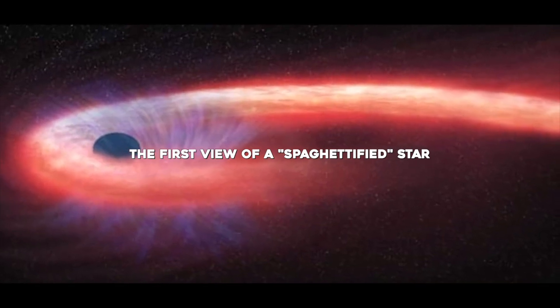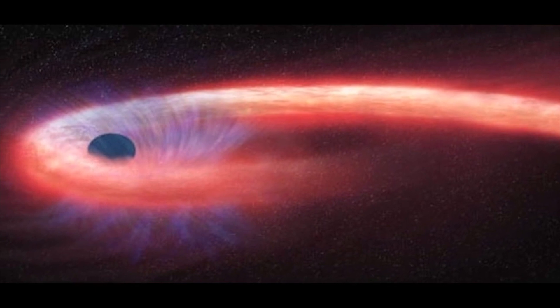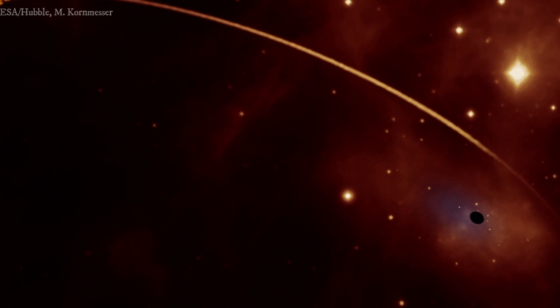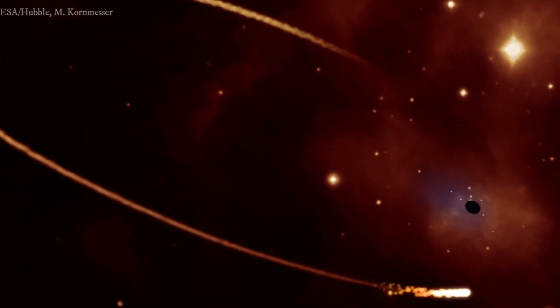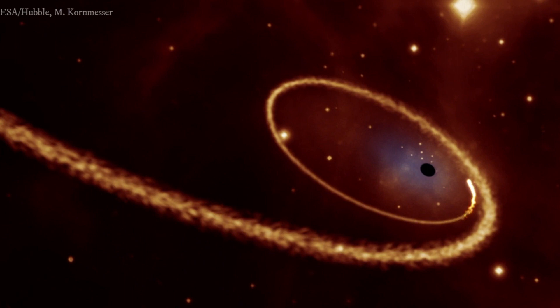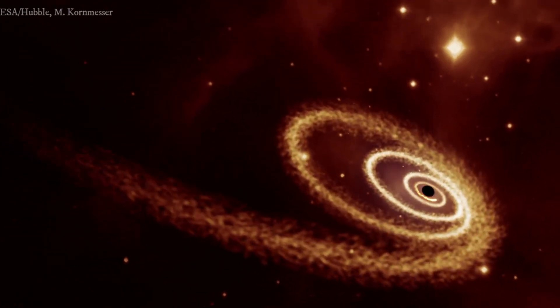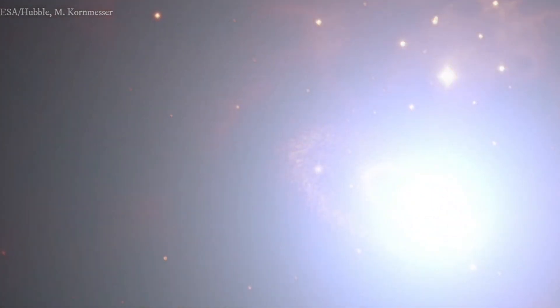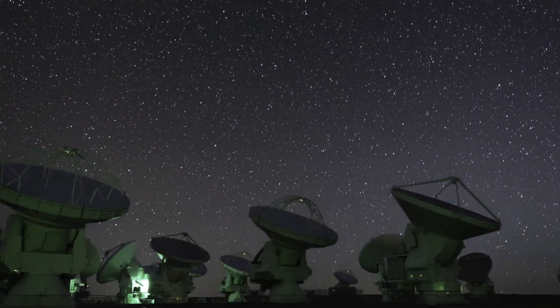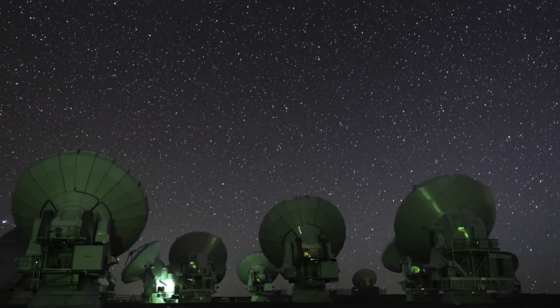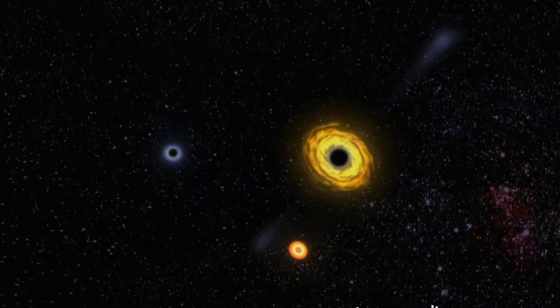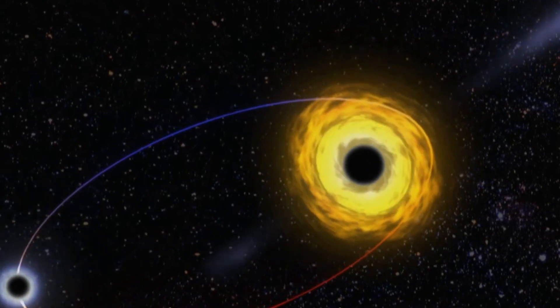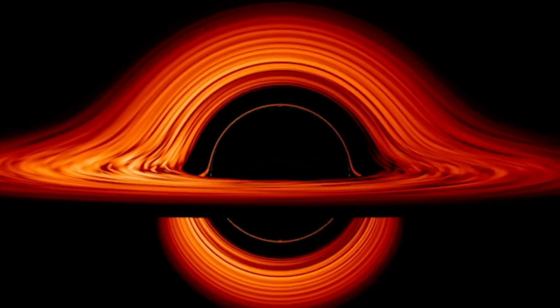The first view of a spaghettified star. Black holes are messy eaters. When an unlucky star ventures too close to one of these voracious objects, the black hole's extreme gravity stretches the star into one long noodle shape in a process called spaghettification. Last year, researchers saw this untidy process happen directly for the first time, when a black hole located 750 million light-years from Earth and weighing 30 million times the mass of the Sun trapped a passing star in its clutches.